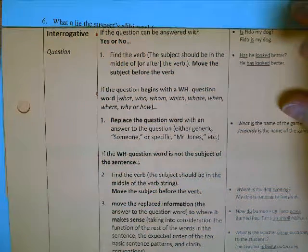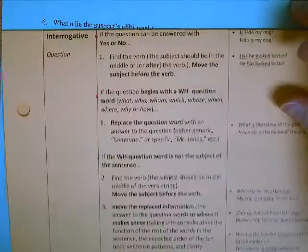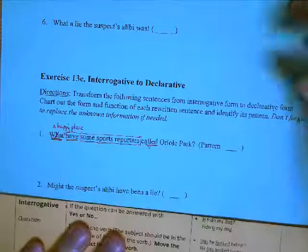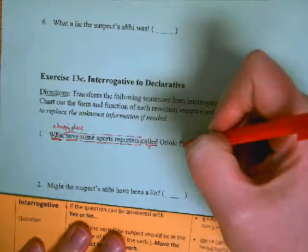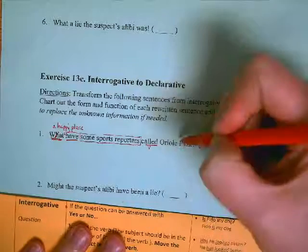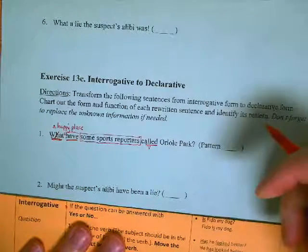Move the subject before my verb. Some sports reporters is going to go here. Then I need to take the replaced information and put it back where it makes sense, taking into consideration the function of the rest of the words, the expected order, etc. Some sports reporters have called a happy place Oriole Park? That doesn't make sense.